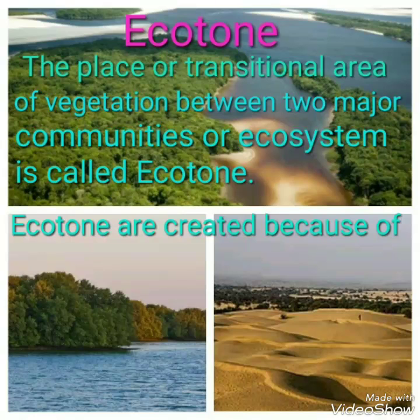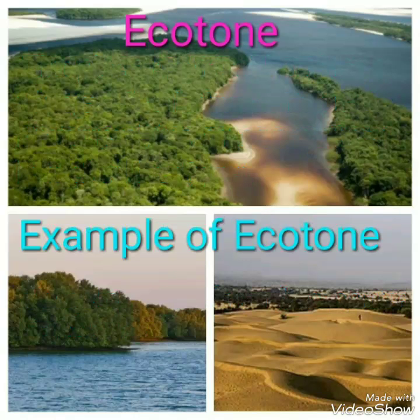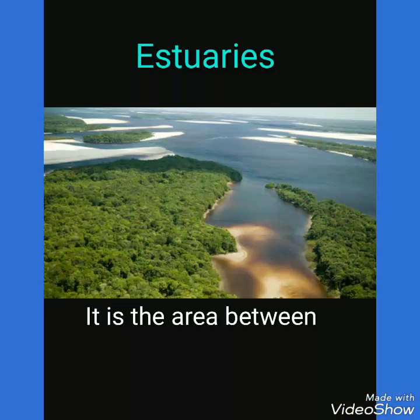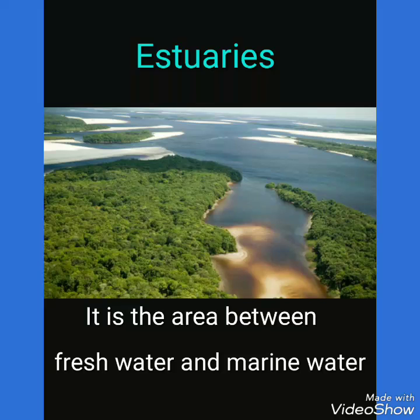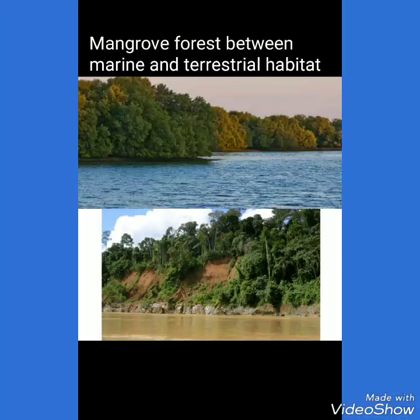Ecotones are created because of abrupt changes in environmental conditions. Some examples of ecotone: first is estuaries, which are the place between fresh and marine water, where they get mixed up. Grassland is another example — it is the place between the forest and desert.